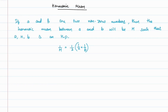Hello students. In the previous video we discussed the nth term, or the general term, of a harmonic progression. In this video we are going to see what the harmonic mean of two given numbers will be — suppose a and b are the two non-zero given numbers.